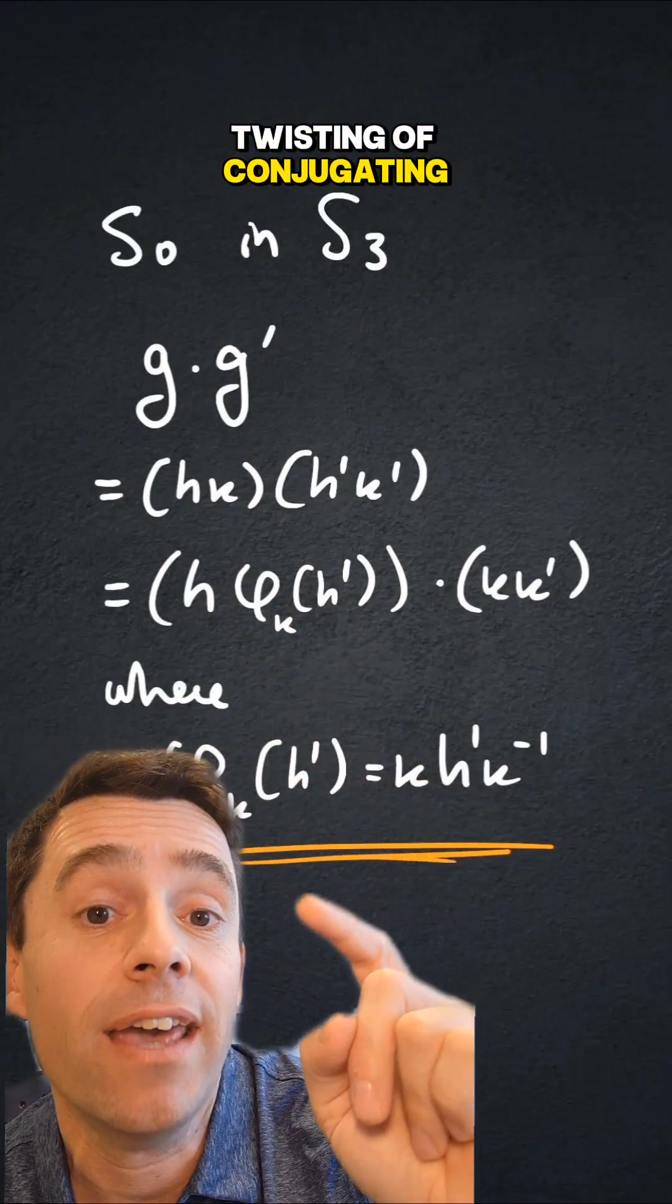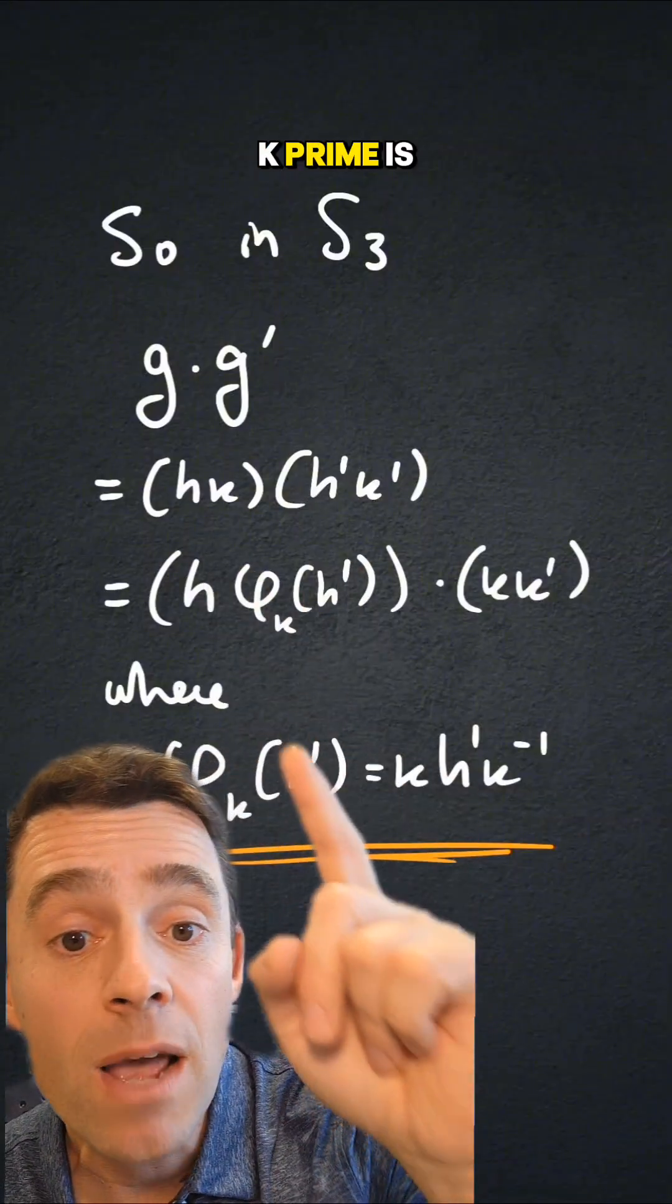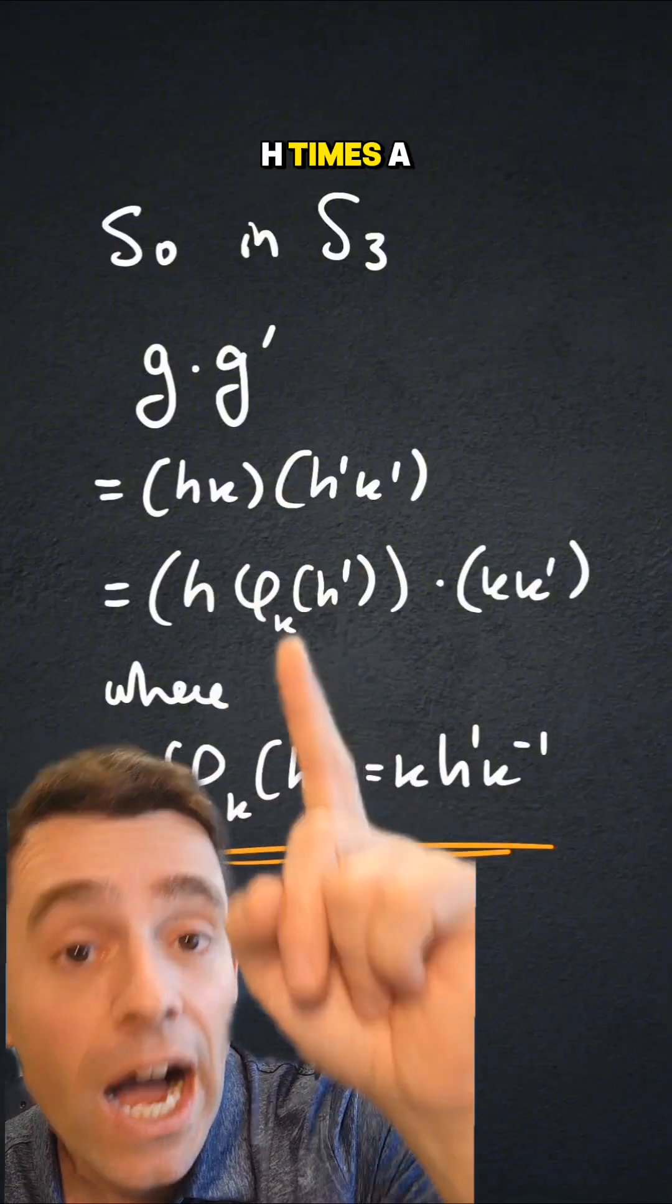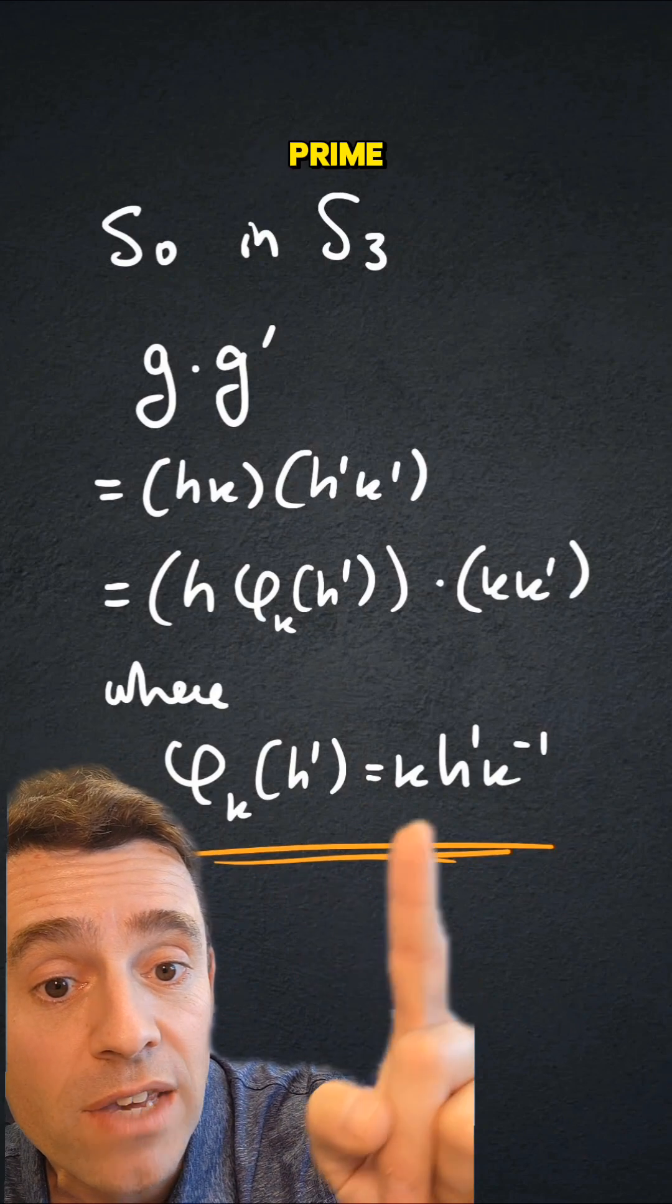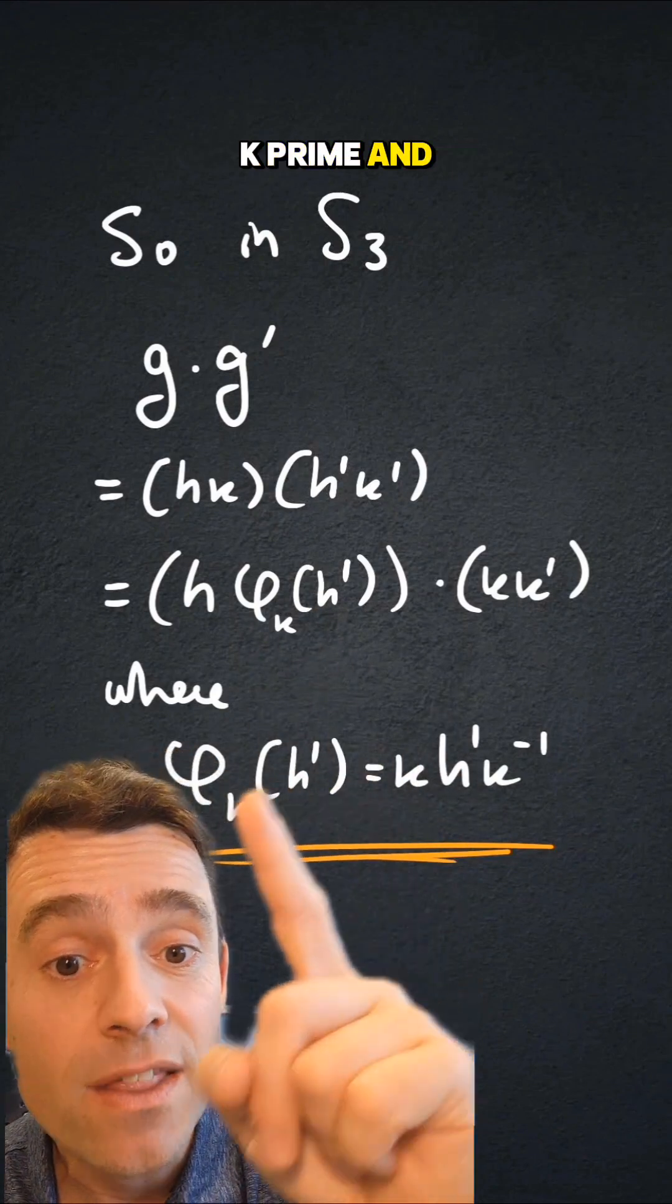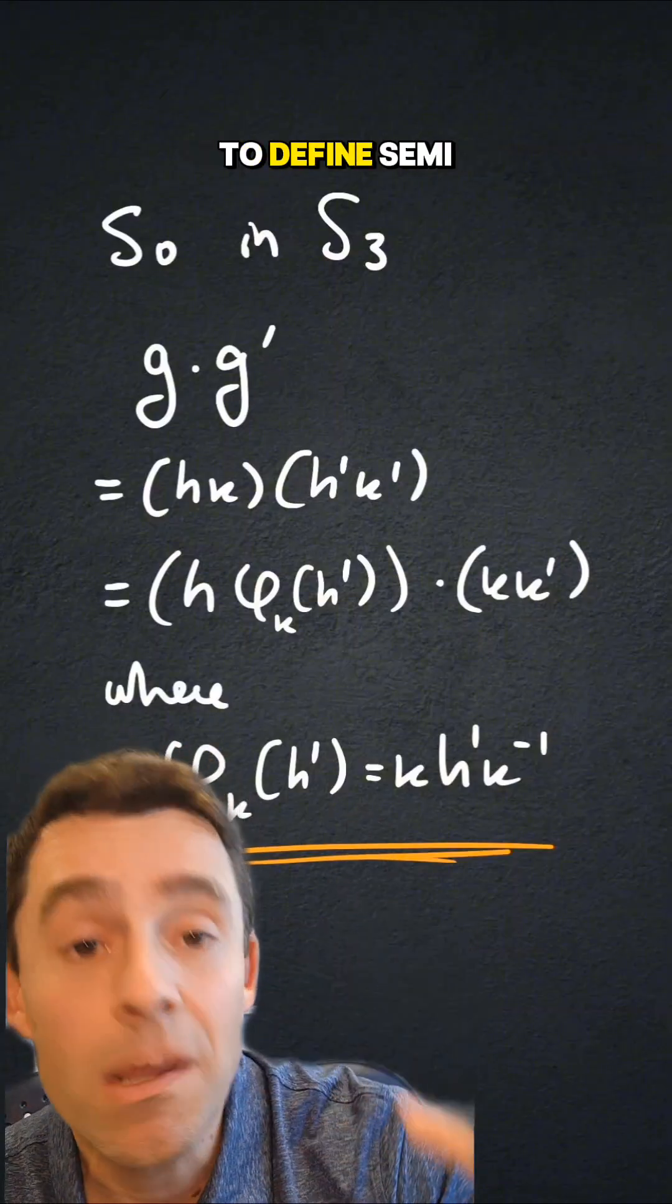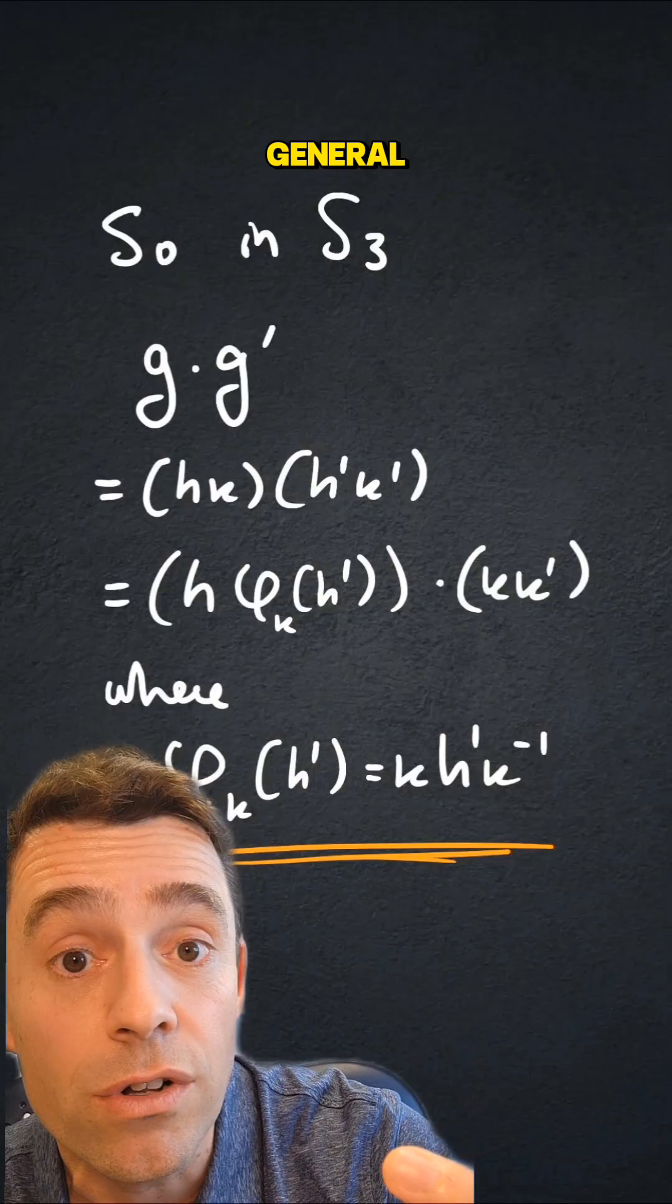I can do that at the price of twisting, of conjugating h'. So what I get is that hk times h' k' is h times a conjugate of h' given by this formula, times kk'. And this formula is what we're going to generalize to define semi-direct products, and it's something that works in general.